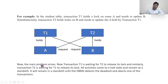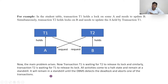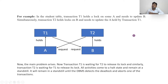Transaction T1 is waiting for T2 to release its lock, and T2 is waiting for T1 to release its lock, but both are not releasing. All activities come to a halt and remain at a standstill. The DBMS must detect the deadlock and cancel one of the transactions — only then will the standstill resolve and transactions flow again.